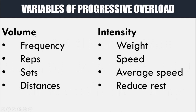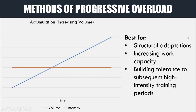We can apply progressive overload in two main categories: progressions in volume and progressions in intensity. We can progress volume by manipulating variables like increasing frequency, increasing reps, increasing sets, or increasing distances. We can also alter intensity by changing the weight used, the speed of something, the average speed of a given exercise, or by reducing rest periods. All these variables can be manipulated to alter volume and intensity and ultimately apply progressive overload over time.